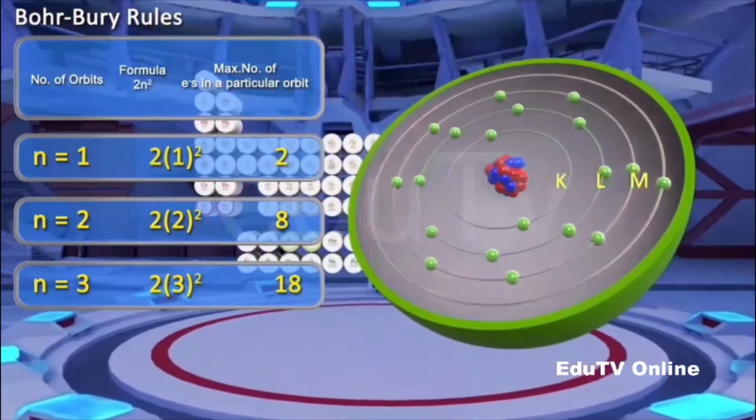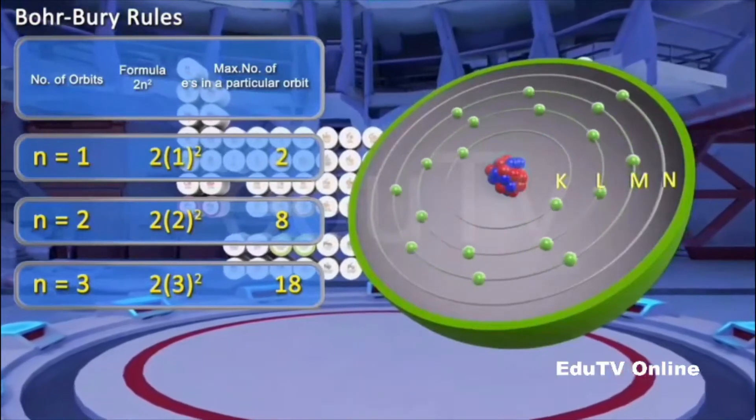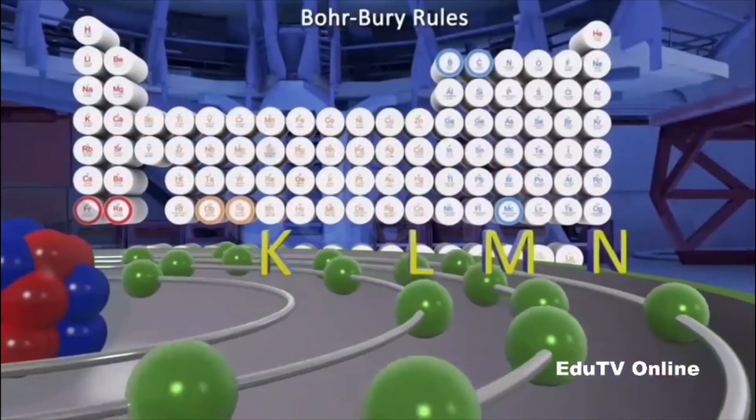Rule 3: The penultimate shell cannot have more than 18 electrons.